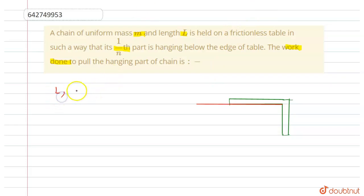And the mass of the chain is m, capital M. Now let one by nth part is hanging, so the total length is l by n.